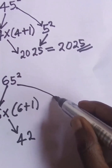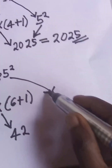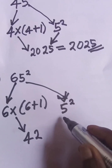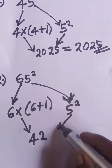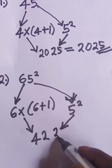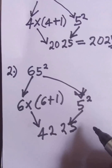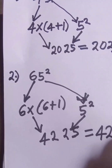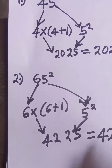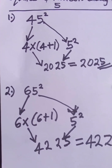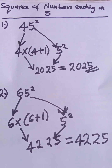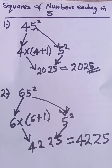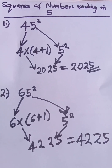The second part is the same: 5 squared is 25. So the answer becomes 4225. You can verify this on a calculator — 65 times 65 gives you exactly what we have here.